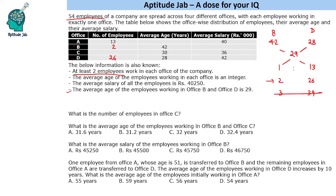Now we can find the number of employees in office C. With 54 total employees, subtracting the known offices: 54 minus 15 minus 41 gives 13 employees in office C.